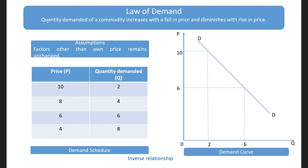If its price is at a lower level or its price falls, then we tend to increase its demand — we purchase more and more of that good. When its price increases, we purchase less and less of that good. So the law of demand states or explains this relationship between price and quantity demanded of a commodity.